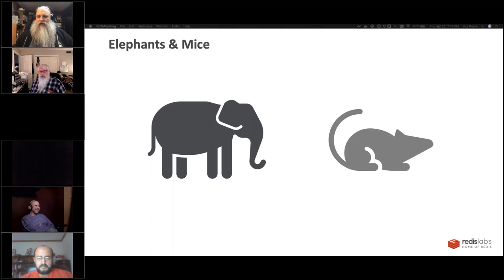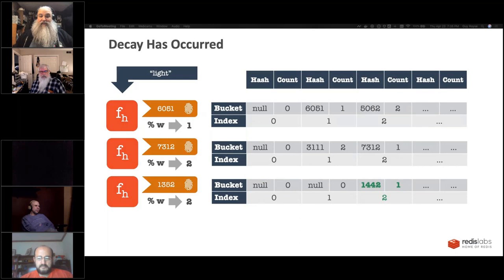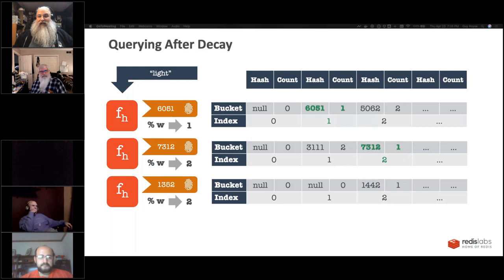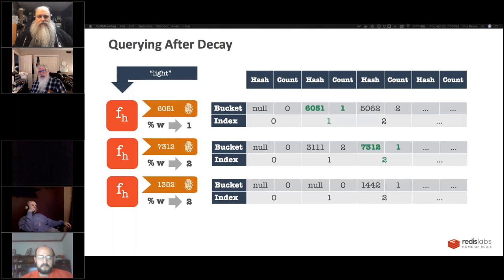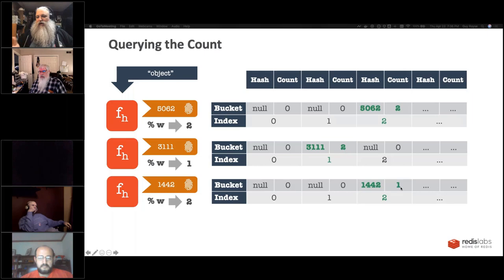Rolling a d100 to see if I get 90 or less — I rolled a four, so we definitely decay this. The 1352 hash value doesn't get stored, but the one that was there before gets decremented. Now the number is smaller. If we go to read 'light', we'll only find it in two of our three arrays, but the count is still correct — we added it once and it's one. If we query 'object', which now has one of its members decayed, we get two, two, and one. We take the biggest one — two — so it's still correct. These multiple copies of the data guard against the damage that collisions can cause.